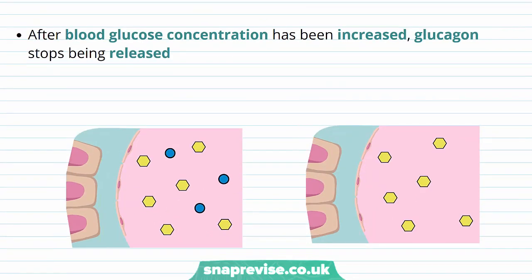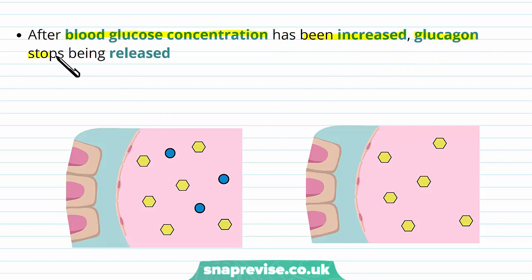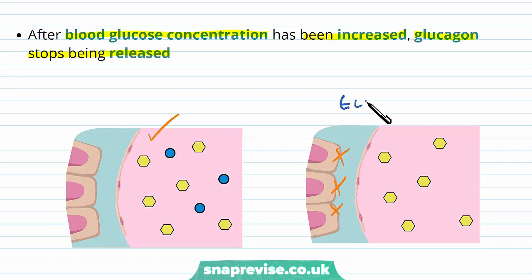After a certain amount of time, the blood glucose concentration has been brought back up and the demand for glucagon will go down and it will stop being released. Eventually the pancreas will notice that the blood glucose has gone back up, so the glucagon will no longer be released.